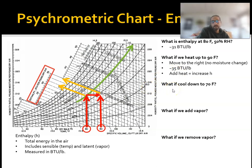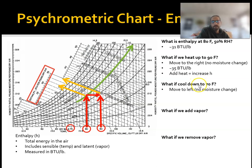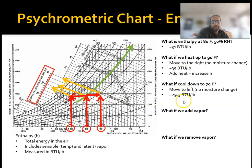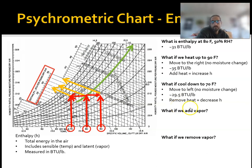H is the symbol for enthalpy, and delta H means change in enthalpy. Let's cool it down to 70°F — we go just to the left, starting back at 80°F, and we end up at about 29.5 BTUs per pound. So: added temperature means we added heat and enthalpy; dropped the temperature means we removed heat, which drops the enthalpy. Add heat, you add enthalpy. Remove heat, you drop enthalpy. Pretty straightforward.